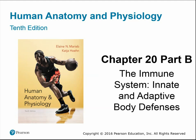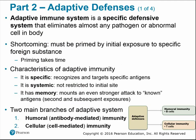This is chapter 20 part B on the immune system, looking at innate and adaptive body defenses. In part A we covered the innate or inborn defenses — the first and second lines of defense — including skin surface barriers, mucous membranes, cells, antimicrobial proteins, inflammation, and fever response. This section looks at the adaptive immune system, a specific defense system able to eliminate virtually any pathogen or abnormal cell. Unlike the non-specific innate system, the adaptive system targets specific types of cells.